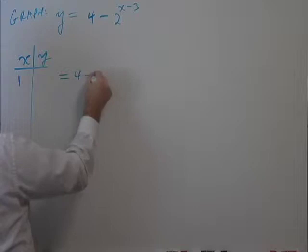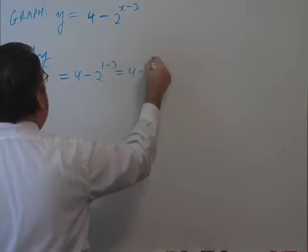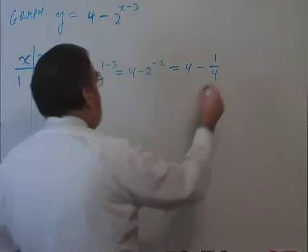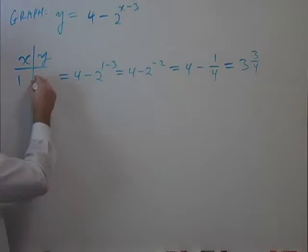Then this is going to be 4 minus 2 to the 1 minus 3. That's 4 minus 2 to the negative 2 power, which would be 4 minus 1 fourth. 2 to the minus 2 is 1 over 2 squared, 1 fourth. 4 minus 1 fourth would be 3 and 3 fourths. So I'll write 3 and 3 fourths here.